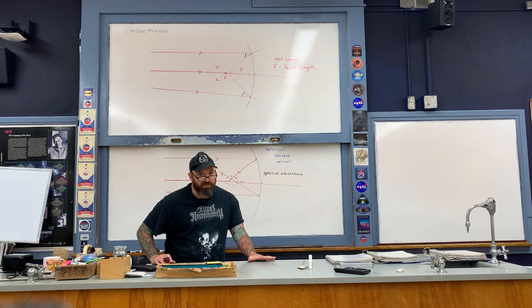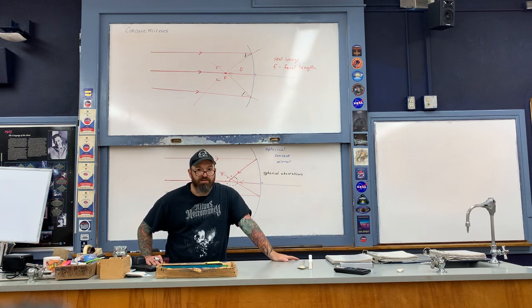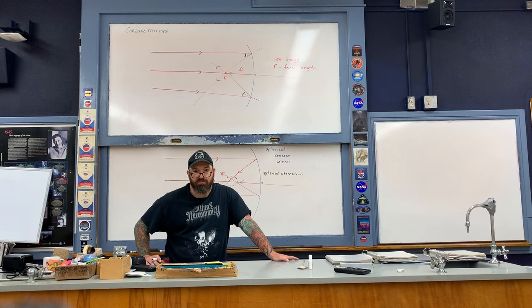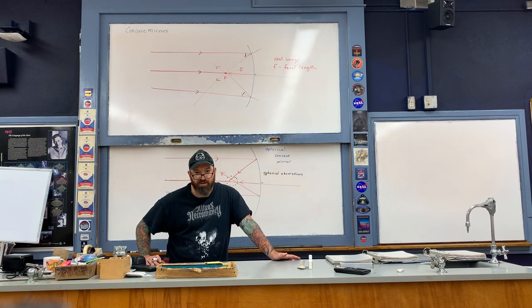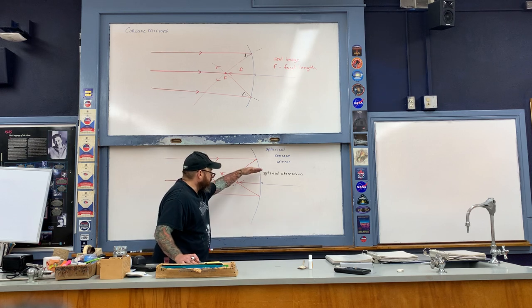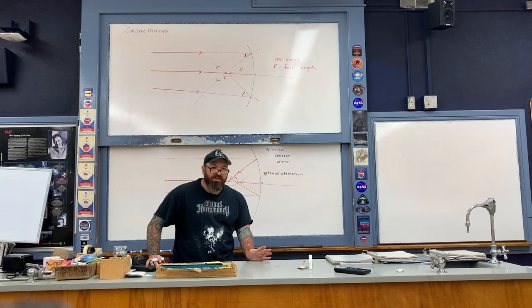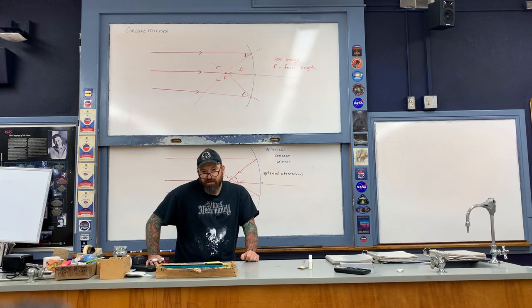Spherical aberration is safe to ignore if the size of the mirror is small compared to the radius of curvature. A nice example is a makeup mirror — a compact concave spherical mirror — where the size is small compared to the radius of curvature, so you don't really see spherical aberration. This is not the case for a telescope; with a telescope, everything uses a parabolic concave mirror to give perfect images. The bigger the spherical mirror, the more noticeable the spherical aberration. From this point forward, we'll deal with spherical mirrors because mathematically they're a little bit easier to describe than parabolic mirrors.